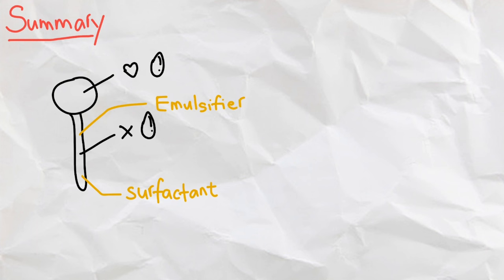And there we have it. Soap is made of a hydrophilic head and a hydrophobic tail, making this structure a surfactant and emulsifier, which lowers the surface tension of a fluid and mixes substances that usually don't mix.